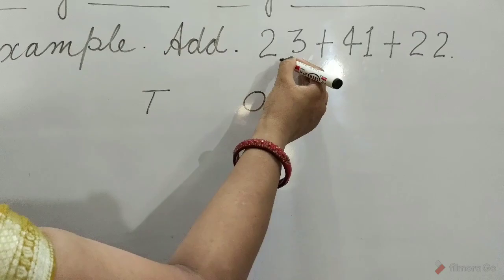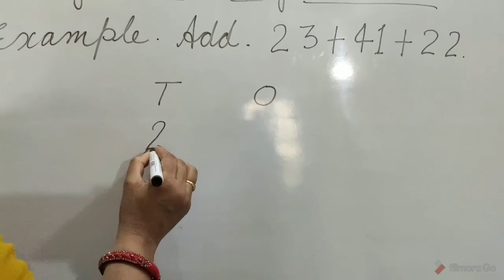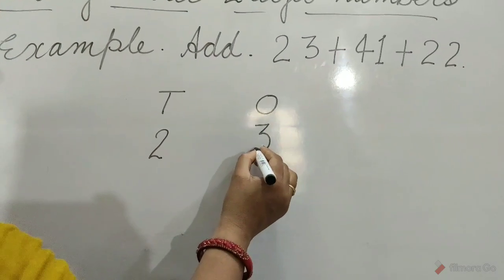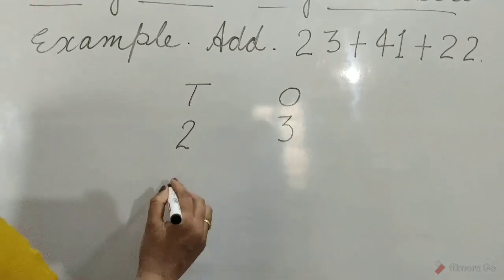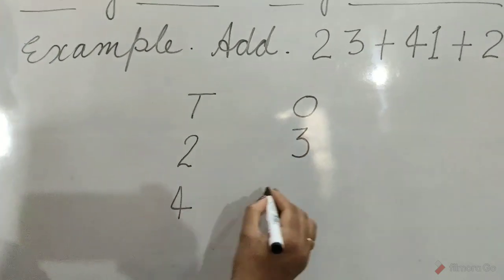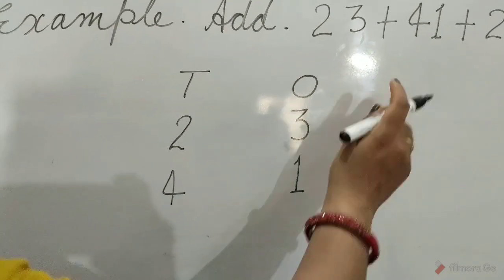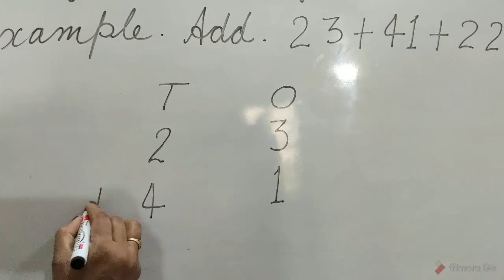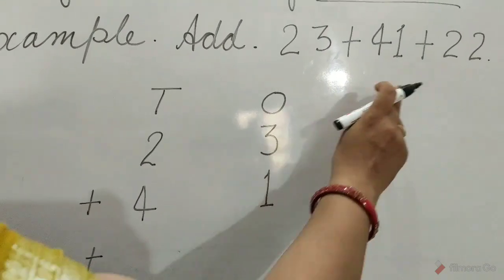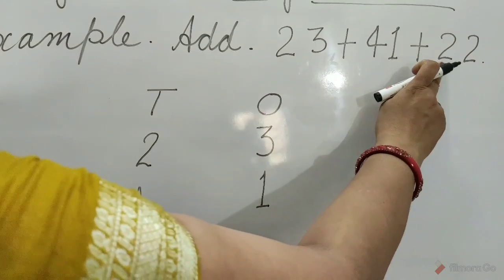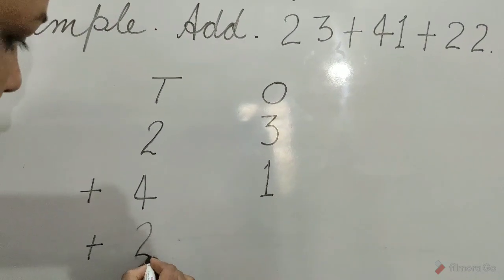2 tens, 3 ones: 23. Plus 4 tens, 1 one: 41. Plus 2 tens, 2 ones: 22.